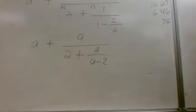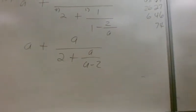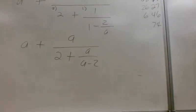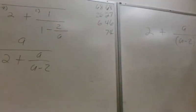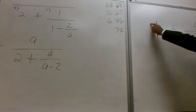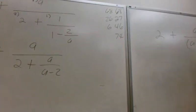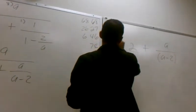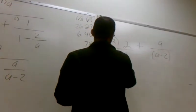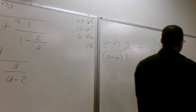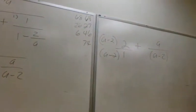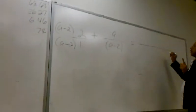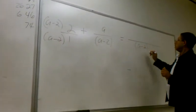So we're going to do 2, and then add it to a over a minus 2. So what's my LCM? A minus 2. So we're going to take the 2 and multiply it by a minus 2 over a minus 2. Now that I have a common denominator, we're going to write the common denominator one time — that's a minus 2.